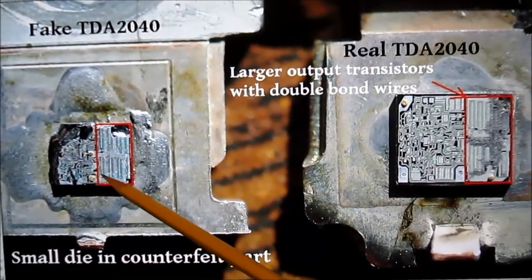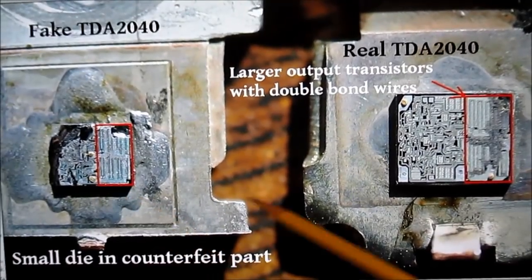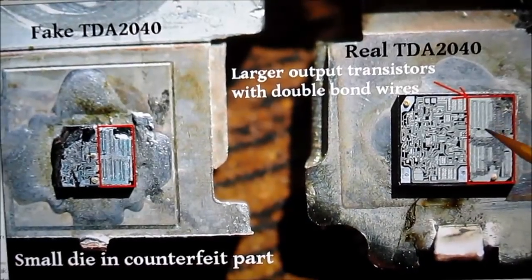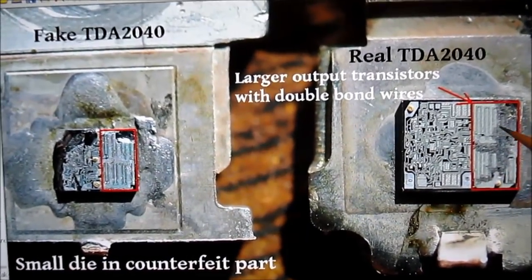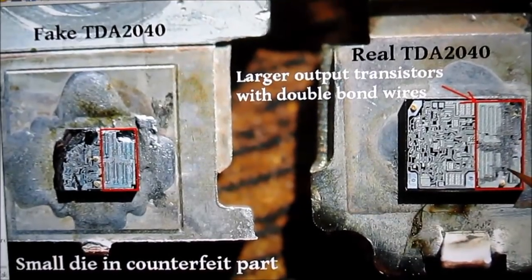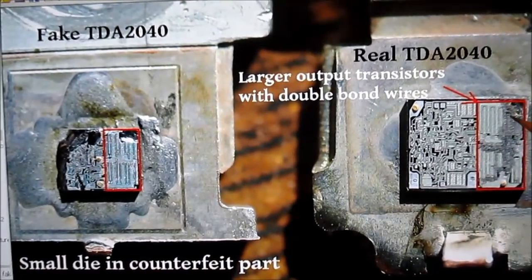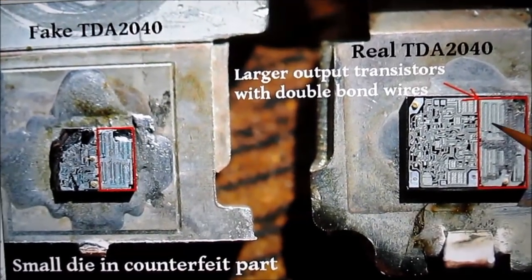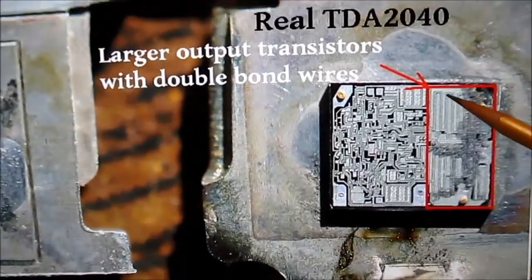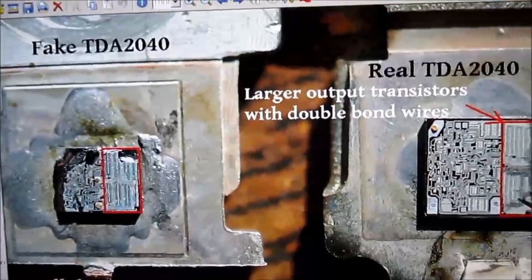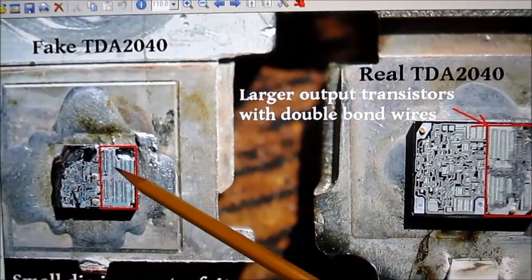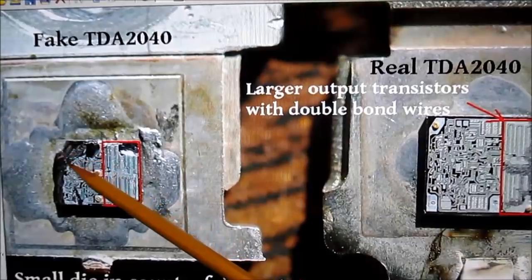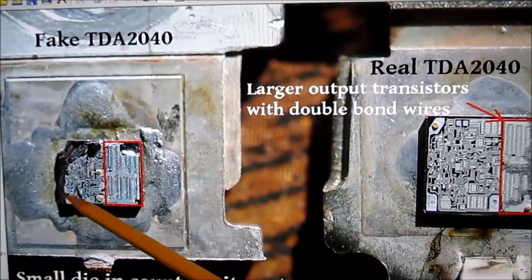I've always found that they use a smaller die. You see this fake part here. Notice the die size difference. The output transistor area, there's some crap on it because I popped the chip and it burned the epoxy. But these are the output transistors and you can see that they are much larger than the ones here on this counterfeit chip.